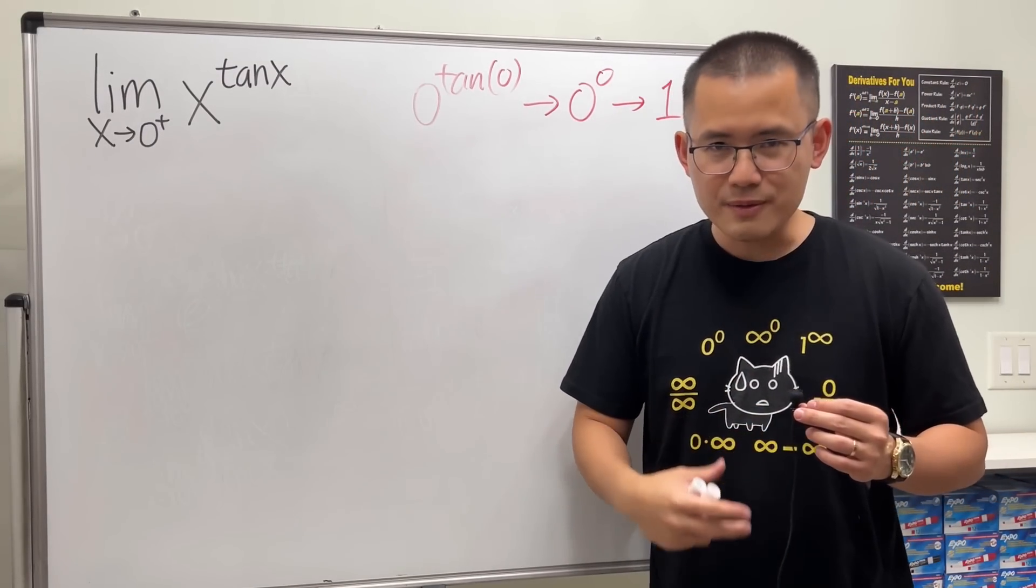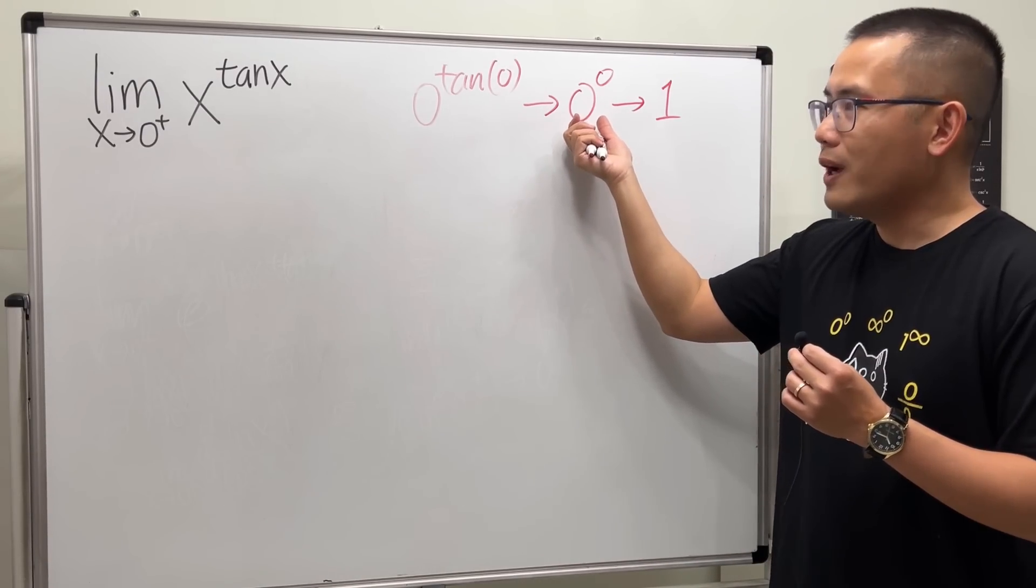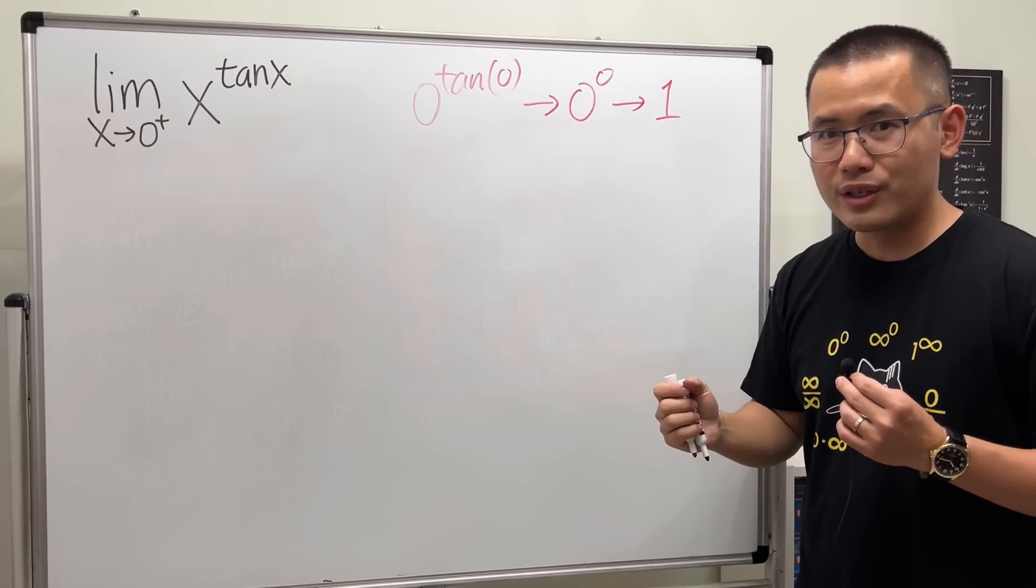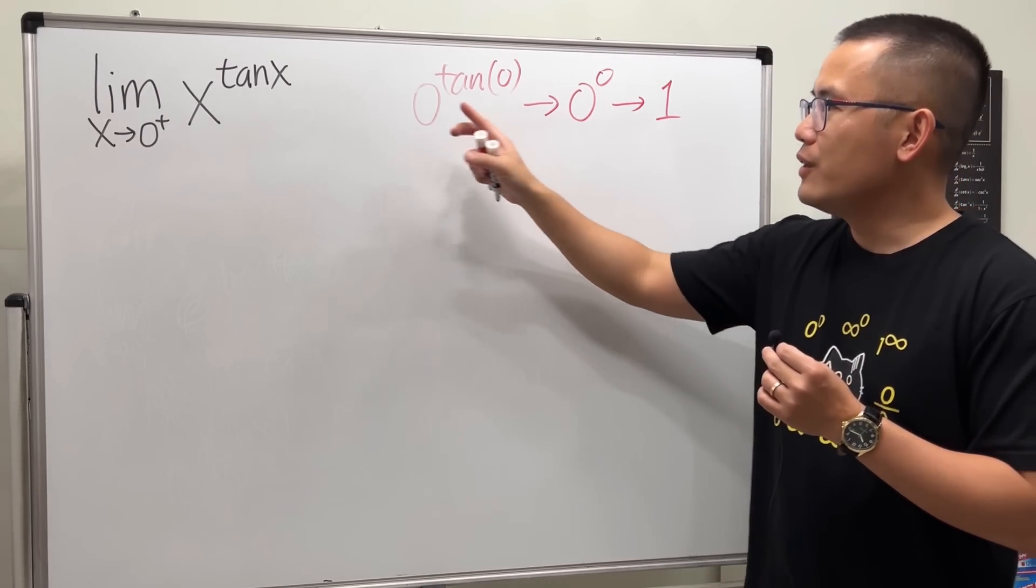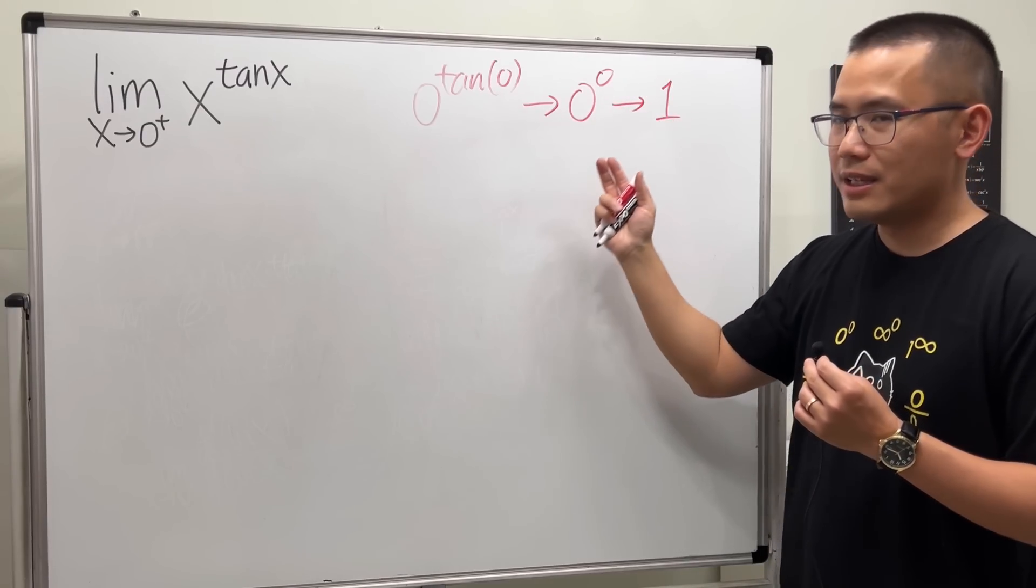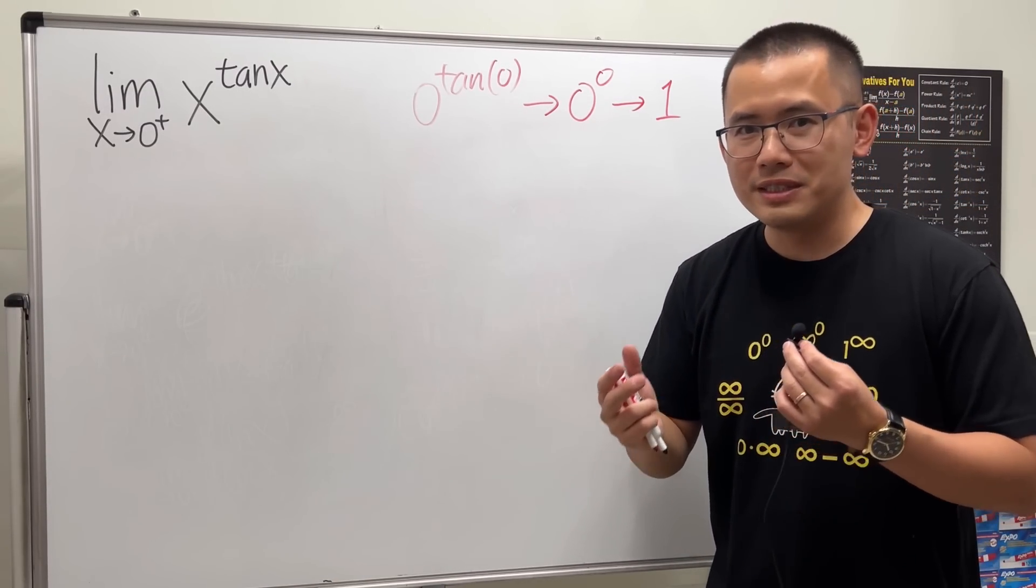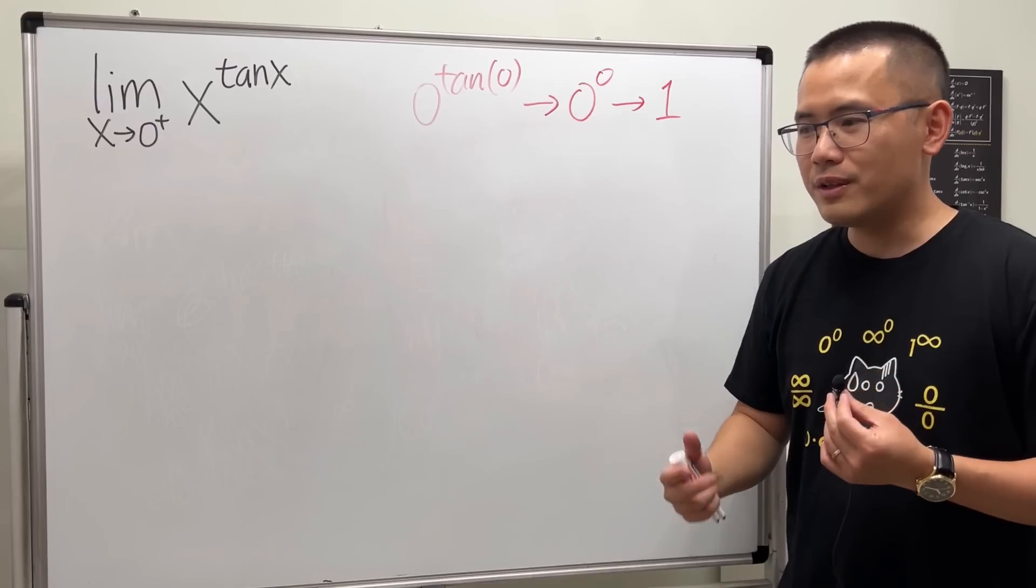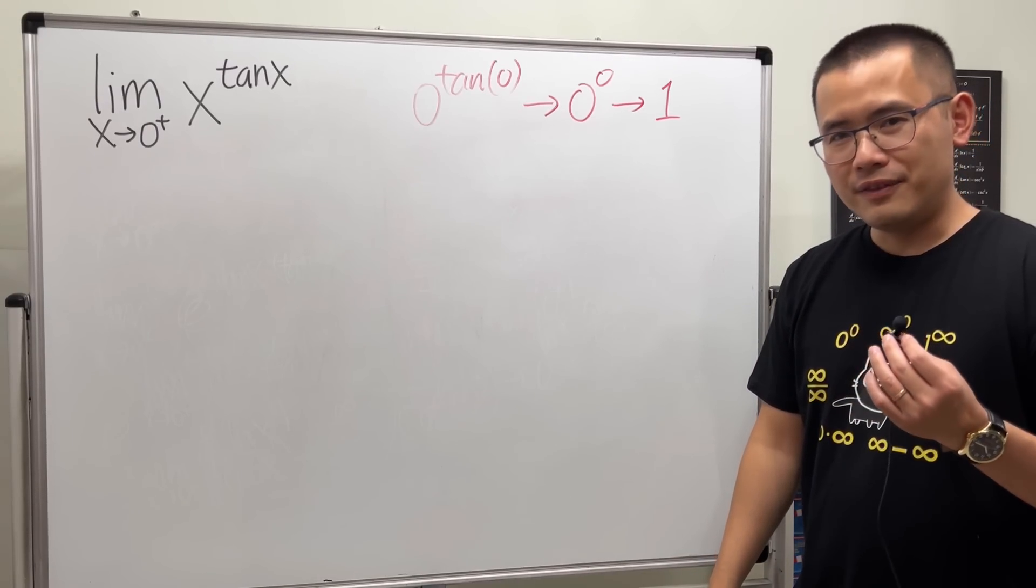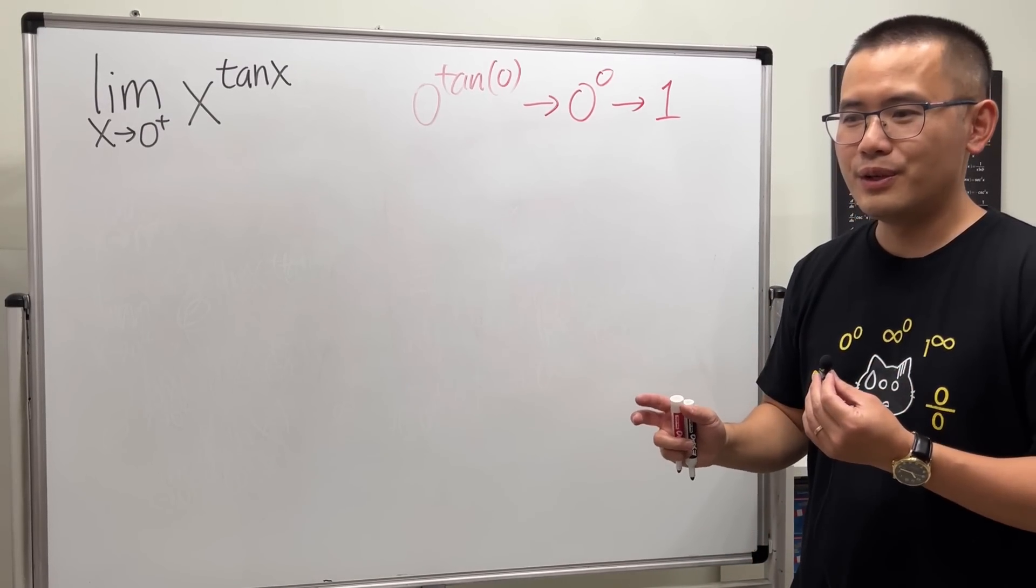Sometimes when we get zero to the zero, this right here is called an indeterminate form. That means we don't know what the answer is yet unless we do more work, because sometimes if we get zero to the zero's power in a limit, we may end up with zero, or maybe we may end up with e.